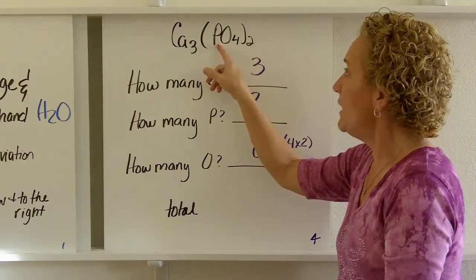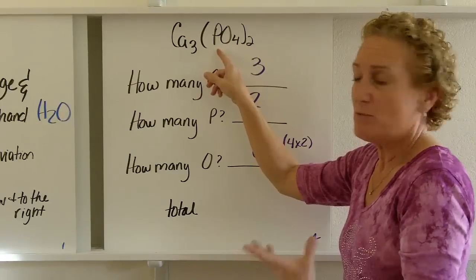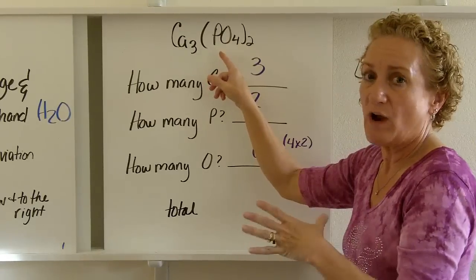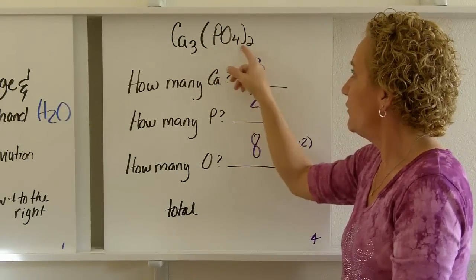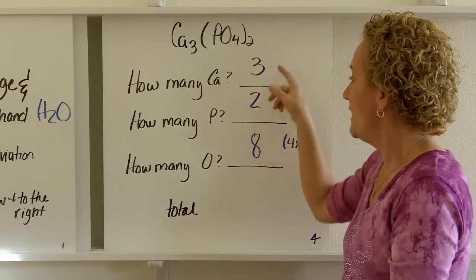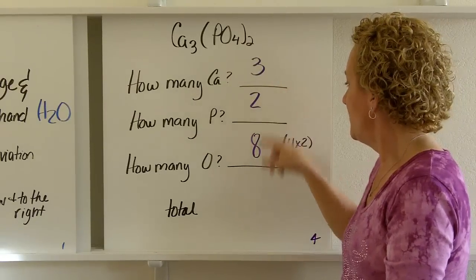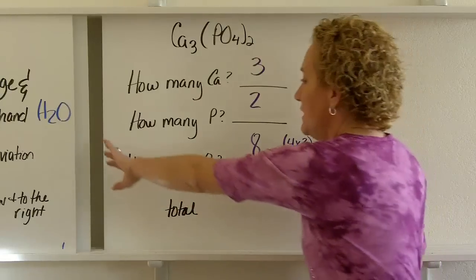Now, there's a little invisible 1 here next to this P. Remember, scientists are basically lazy, so we don't write it, but it's understood. So it's 1 times 2, that tells you how many P's, and 4 times 2, that tells you how many O's. Then you add them up, and it looks to me like that's 13, 13 total atoms.